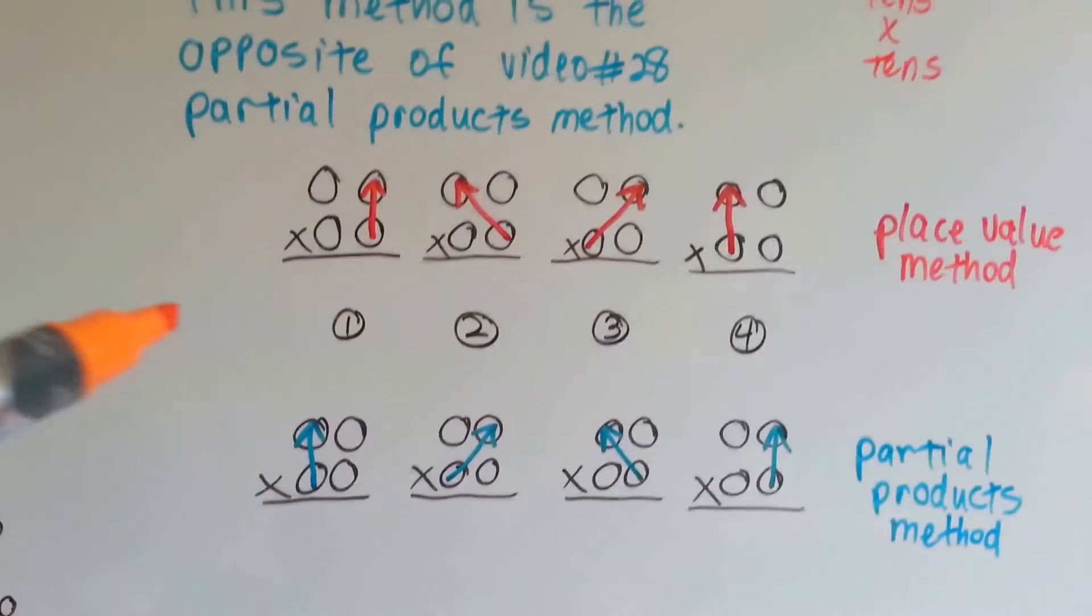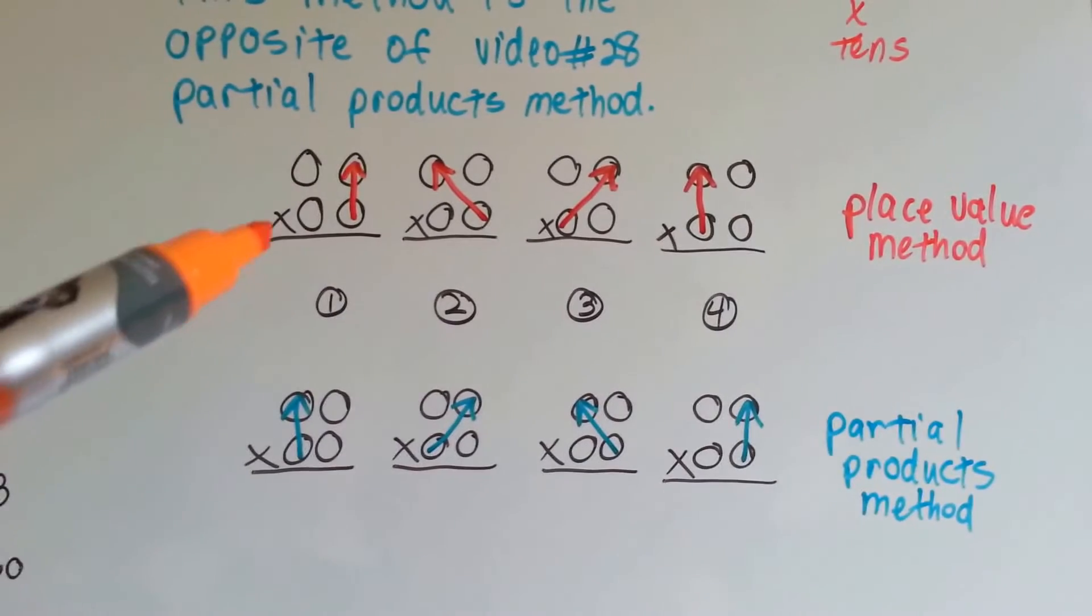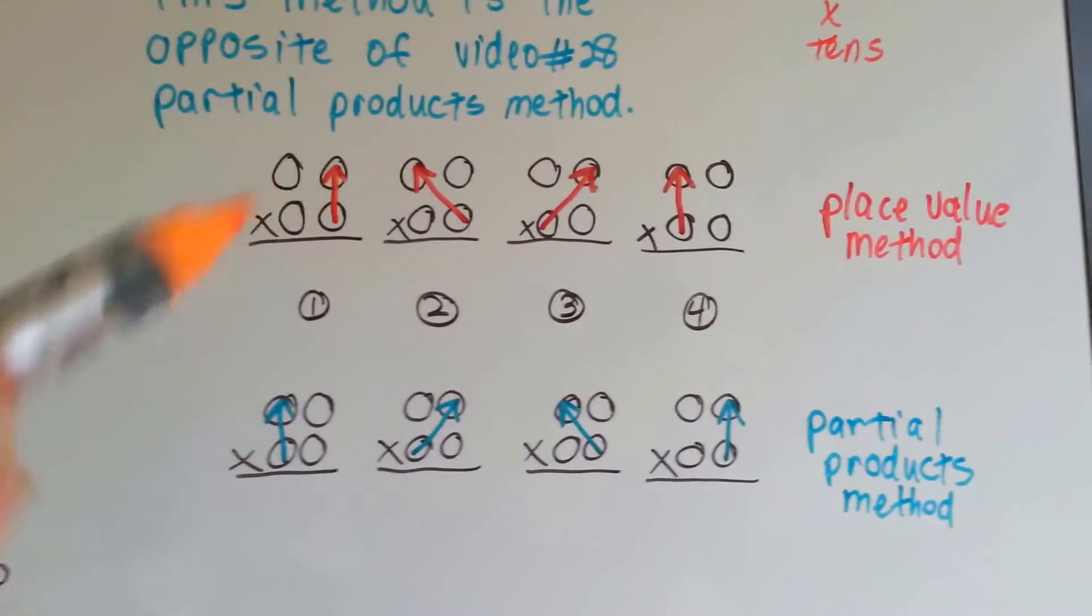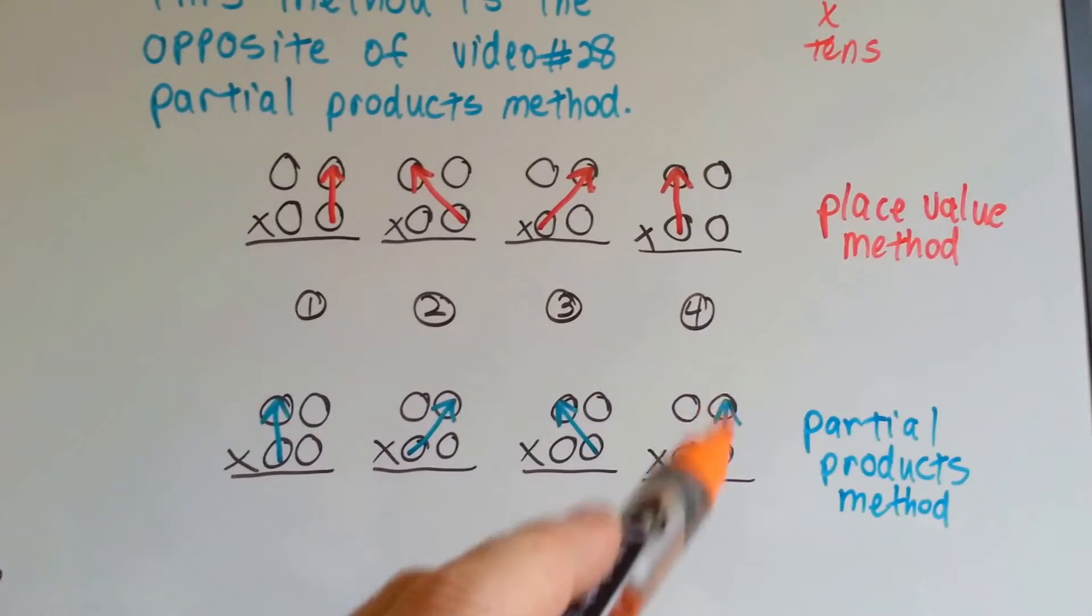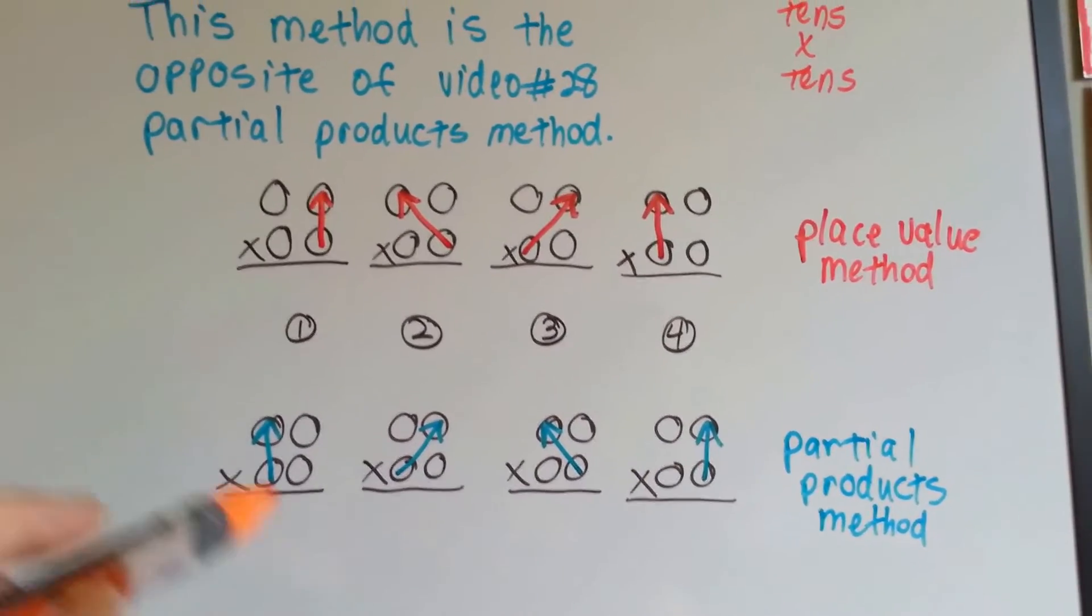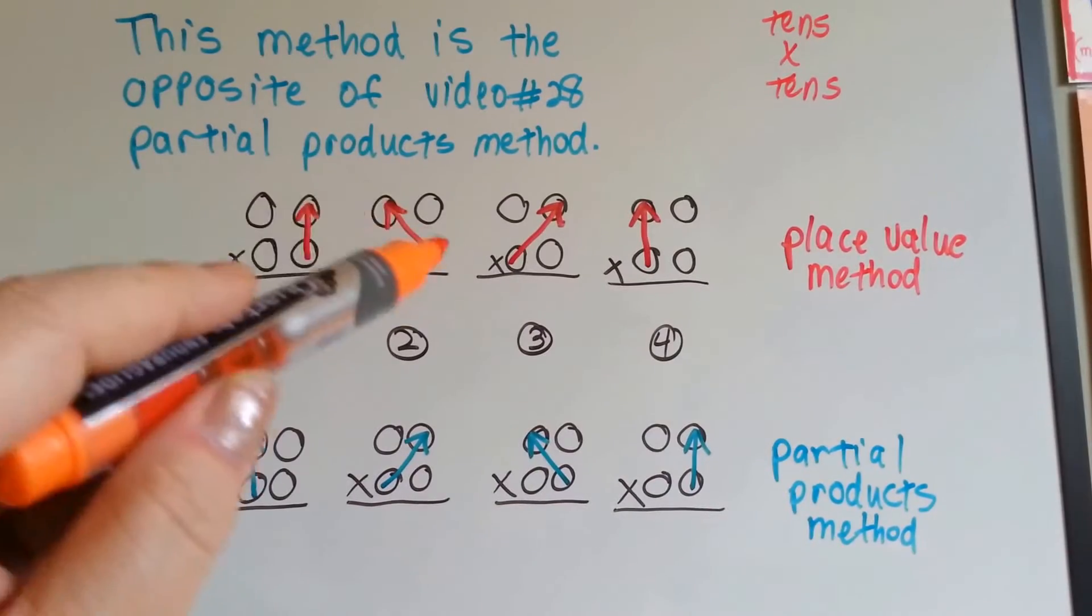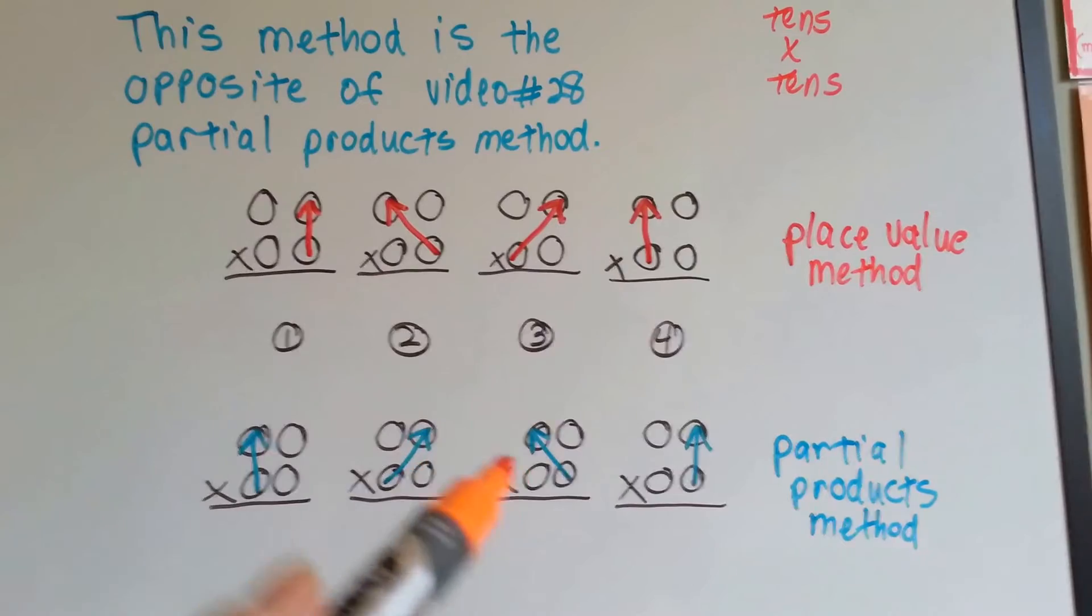If you look, the first thing we do in the place value method is we multiply the 1s. But in partial products, we do that last. See that? And in the place value method, we multiply the 1s to the 10s going this way. But they did that third.